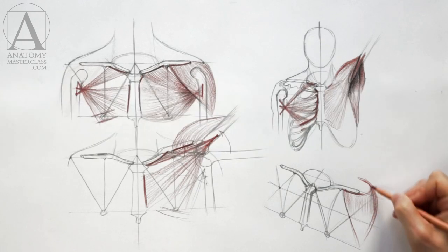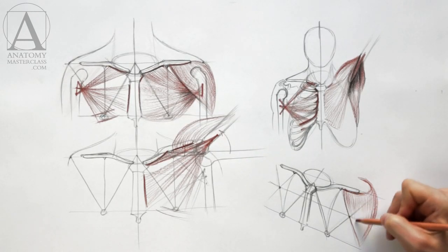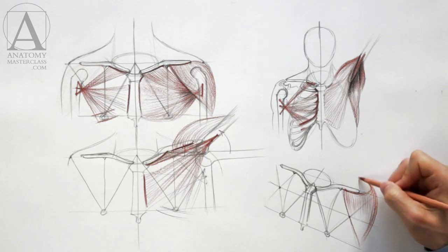In red pencil, I will indicate the shape of the deltoid. It covers the shoulder from the front, side and back.